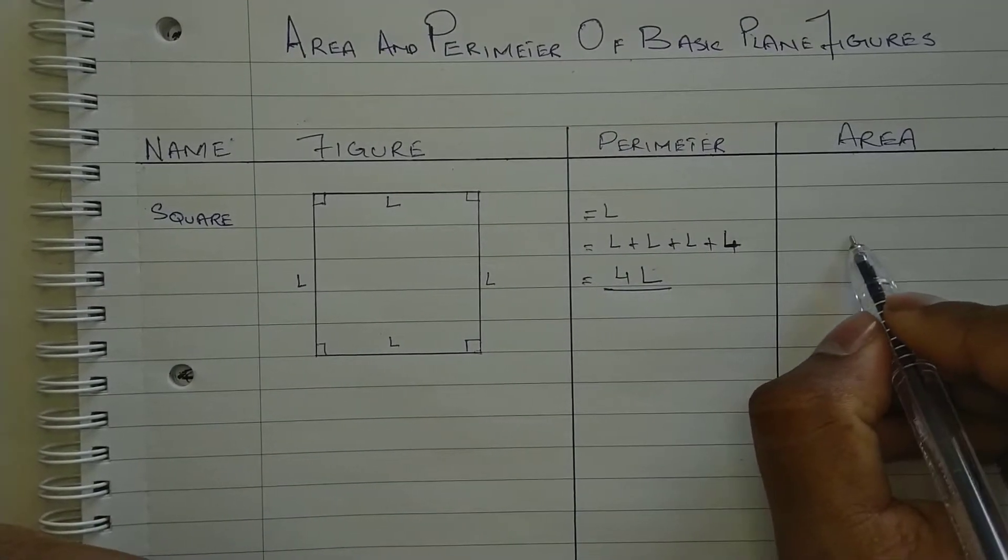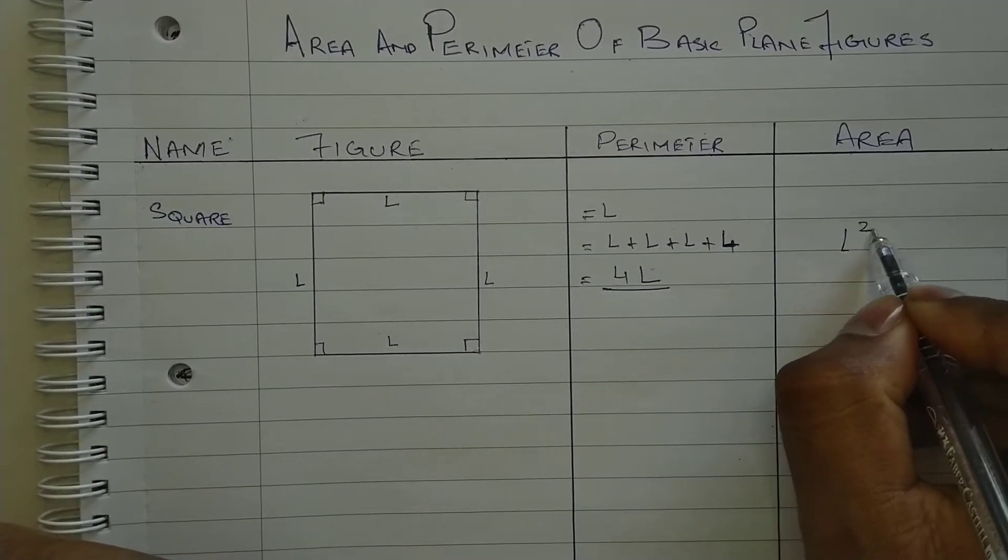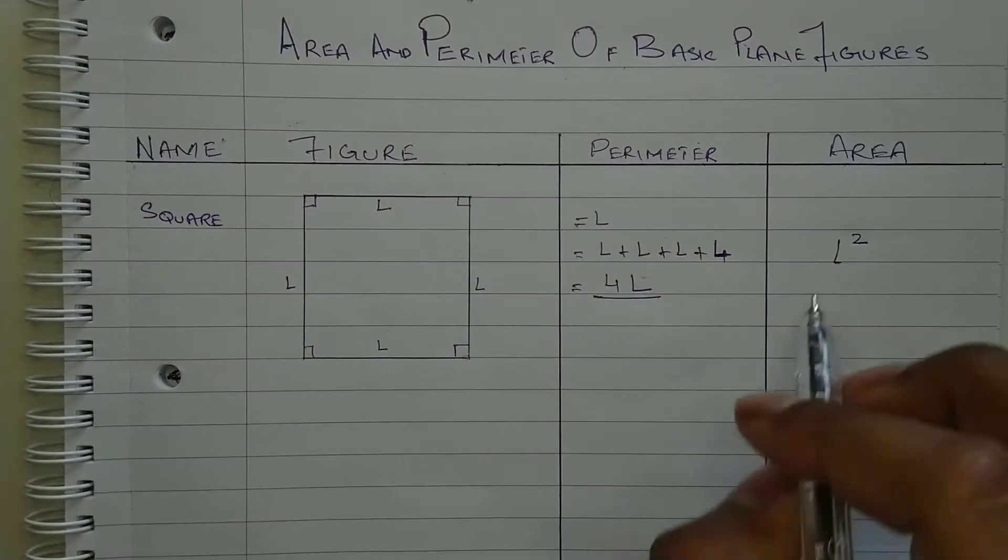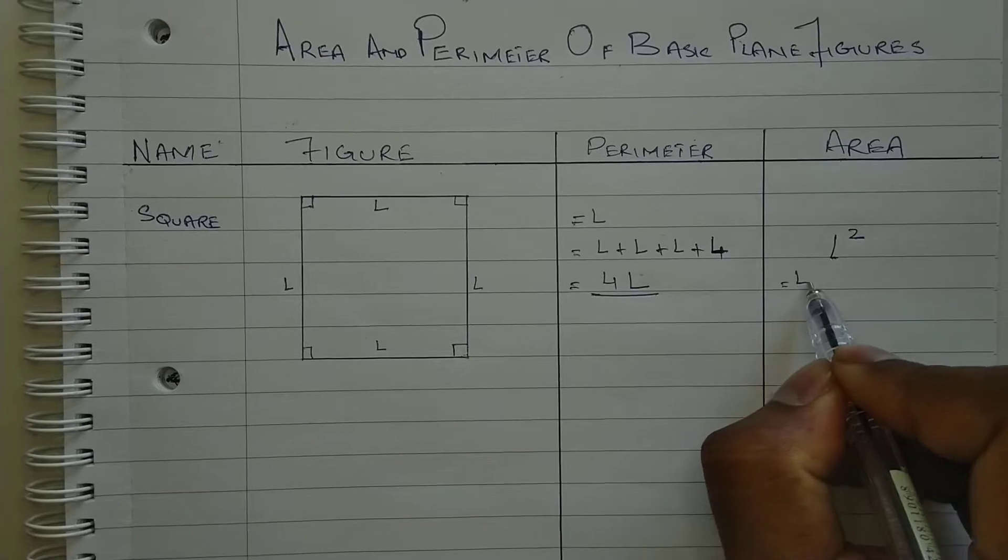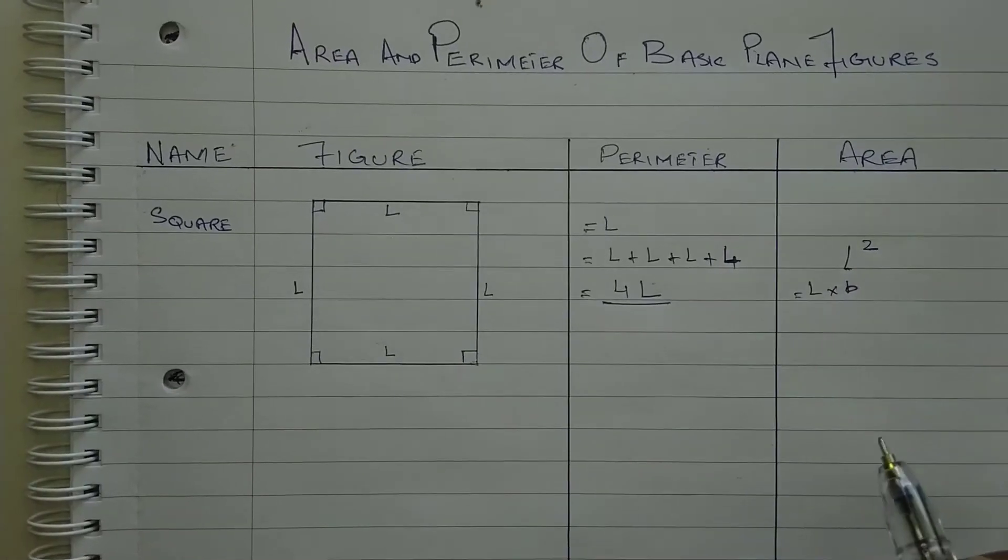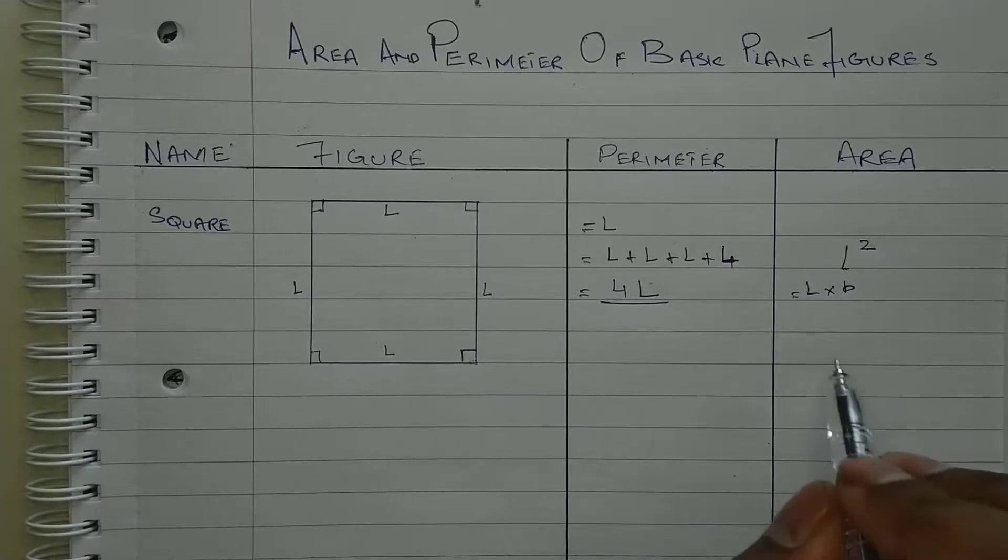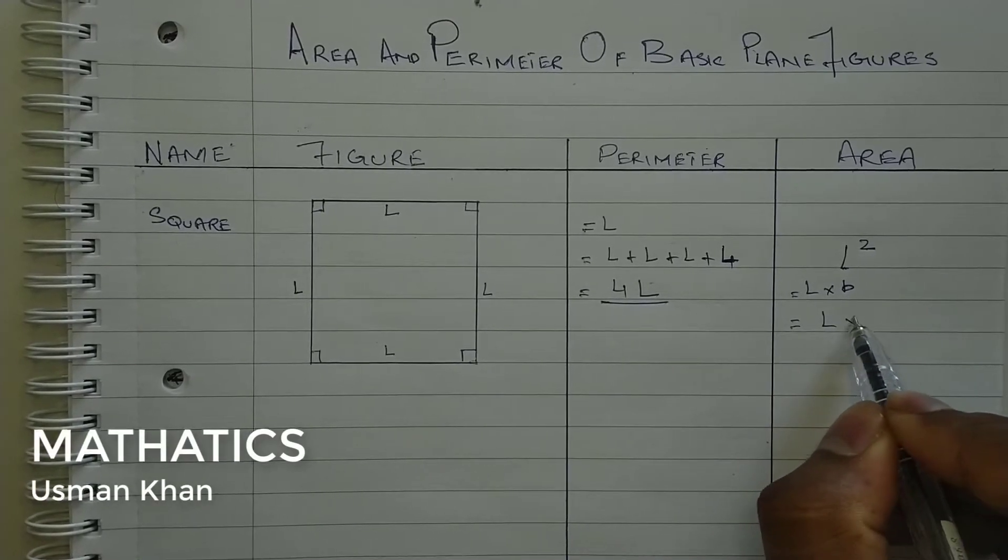As all sides of a square are equal, the formula to calculate area of a square is L square. This formula is derived from a more basic formula which is length into breadth. As all sides of a square are equal, that means length into length is L square.